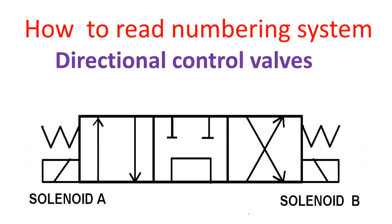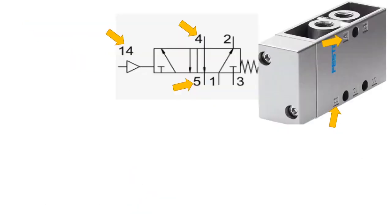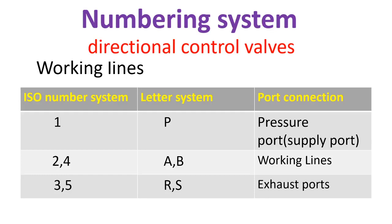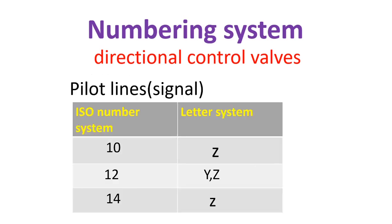Our next topic is the numbering system of directional control valves. If your valve uses numbers or letters for port designation: number 1 or letter P is the pressure or supply port. Numbers 2 and 4, or letters A and B, are working lines. Numbers 3 and 5, or letters R and S, are exhaust ports. For pilot lines or signal: 10 equals Z, 12 equals Y or Z, and 14 equals Z.